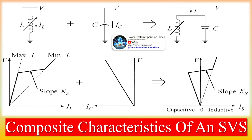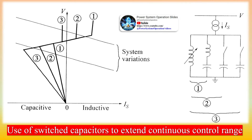A STATCOM is comparable to a synchronous condenser or compensator which can supply variable reactive power and regulate the voltage of the bus where it is connected. A STATCOM, previously called a static condenser, has a similar equivalent circuit as that of a synchronous condenser. The AC voltage is directly proportional to the DC voltage VDC across the capacitor C, as shown in the circuit for a single-phase STATCOM. There are many technical advantages of a STATCOM over an SVC.